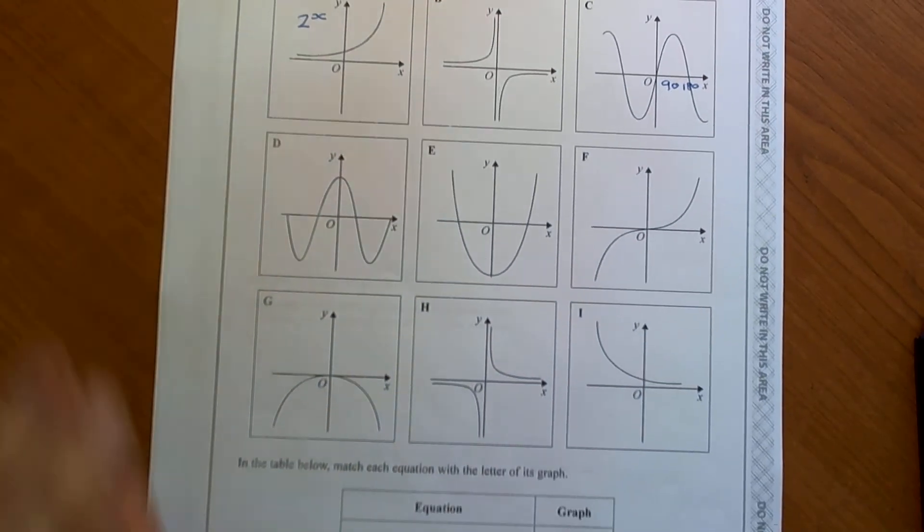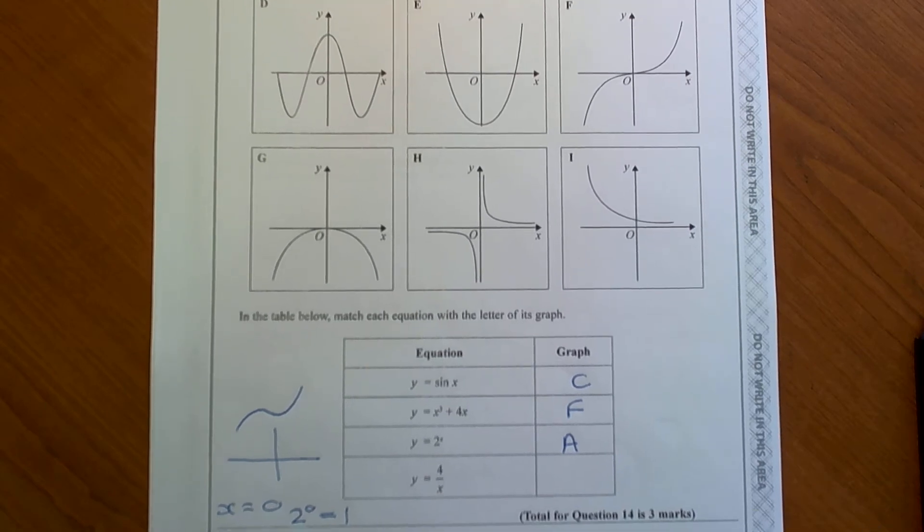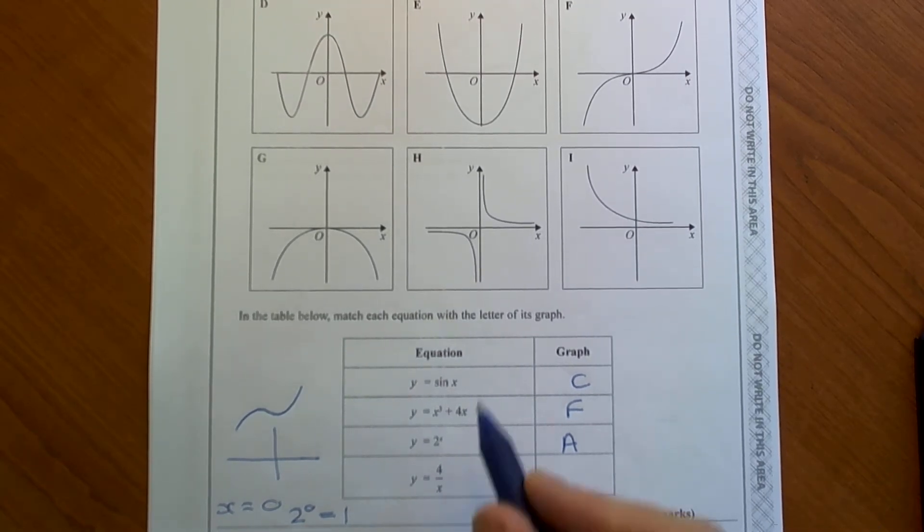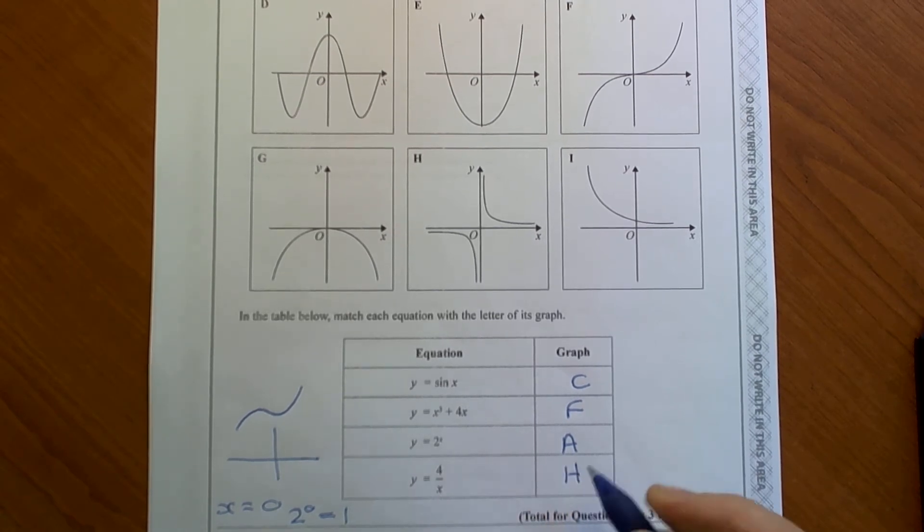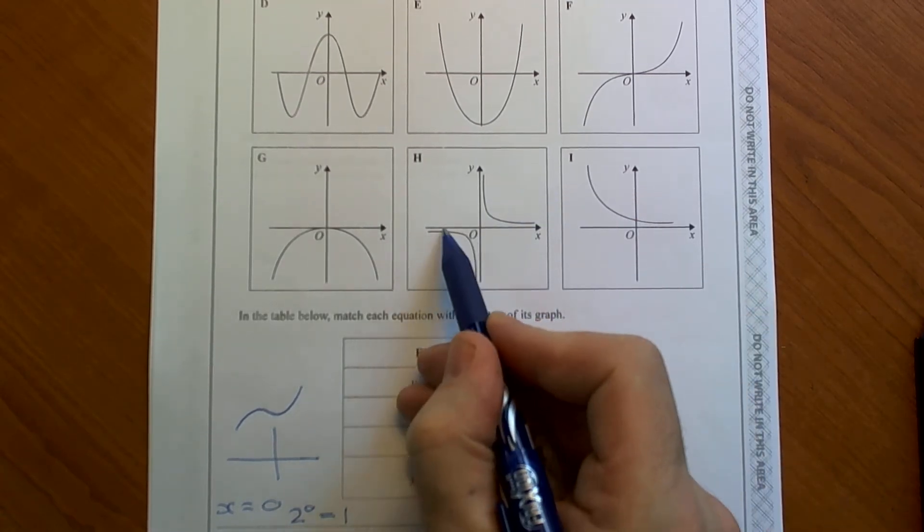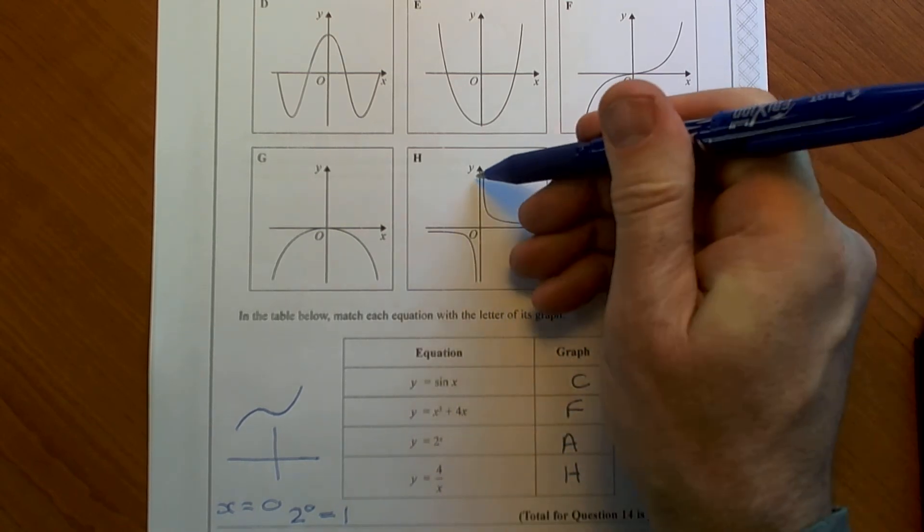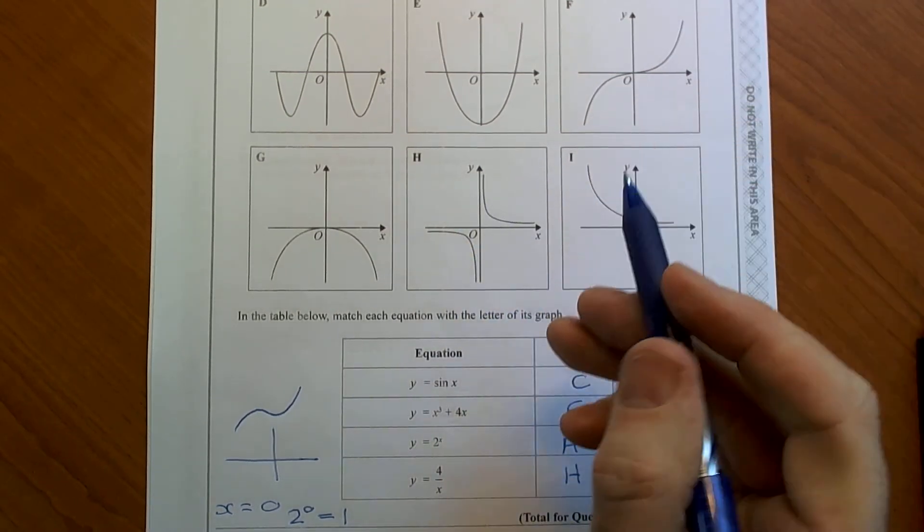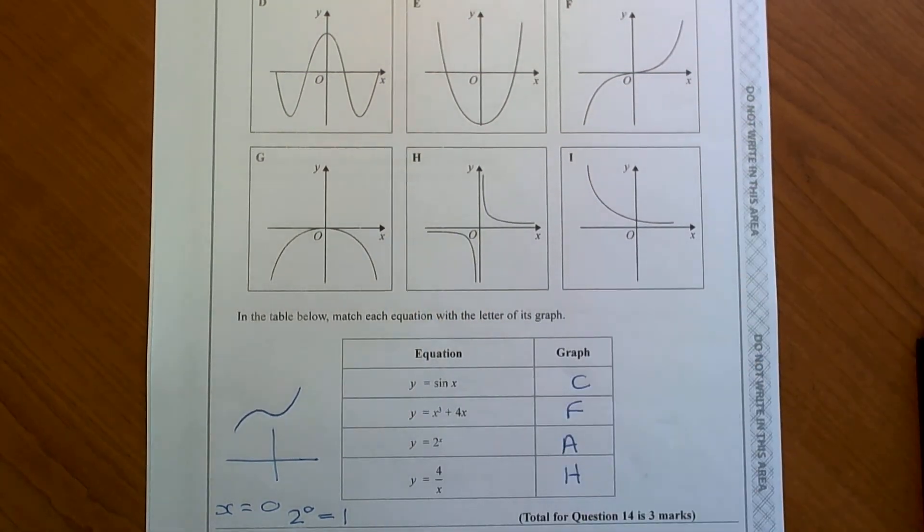And then the other one you need to know is any graph that's like 1 over x or a number over x is going to look like H. This type of graph has an asymptote there for the x-axis and an asymptote there. An asymptote is where the graph doesn't actually touch the axis.